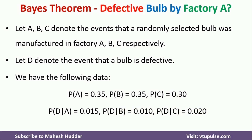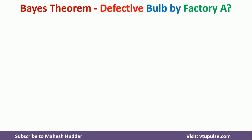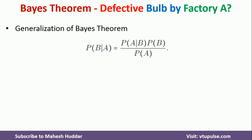Using this data, we want to find the probability that the bulb is defective and it is produced at factory A. We cannot use the standard Bayes Theorem here because we have three factories. The standard Bayes Theorem gives probability of B given A as probability of A given B times probability of B divided by probability of A, but that formula is insufficient when we have multiple factories.